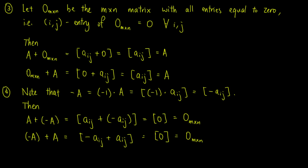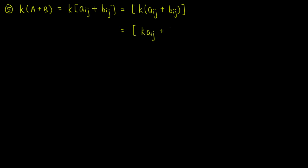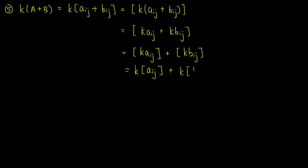For the fifth property, K times (A plus B) equals K times the matrix with entries Aij plus Bij, which is equal to the matrix with entries K times (Aij plus Bij) using the definition of scalar multiplication. By properties of the real numbers, we can distribute K inside the bracket to get the matrix with entries K times Aij plus K times Bij. We break this into two matrices with entries K times Aij and K times Bij. By the definition of scalar multiplication, this is equal to K times A plus K times B.